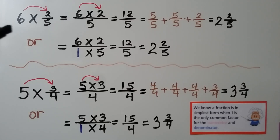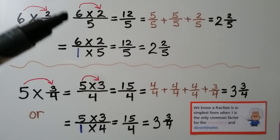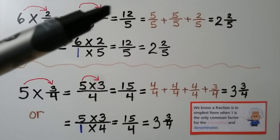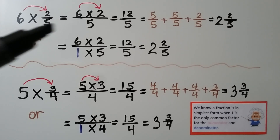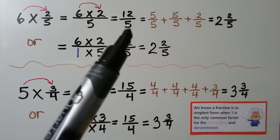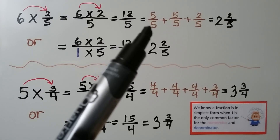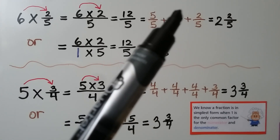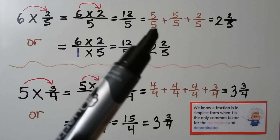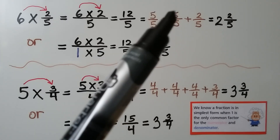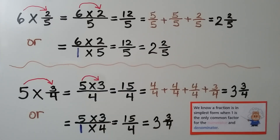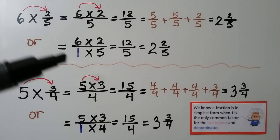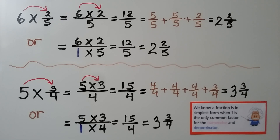Here we have 6 times 2 fifths. We can write it as 6 times 2, which is 12, over that 5 denominator. That's equal to 12 fifths, which is equal to 5 fifths plus 5 fifths plus 2 fifths. 5 plus 5 plus 2 is 12 over the denominator 5. That's equal to 1 whole, 2, that's 2 and 2 fifths. We can also write it as 6 times 2 over 1 times 5, which is equal to 12 fifths, also equal to 2 and 2 fifths.